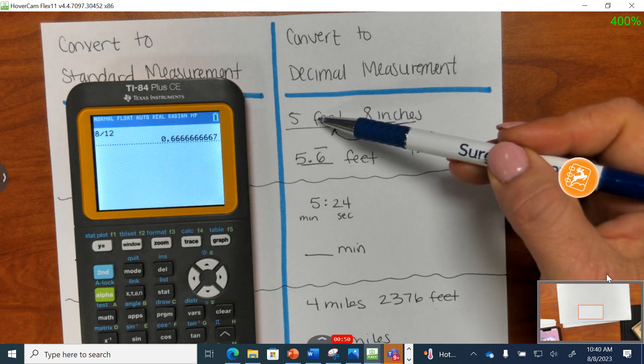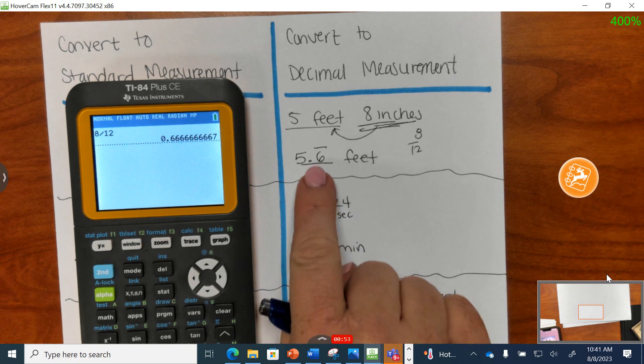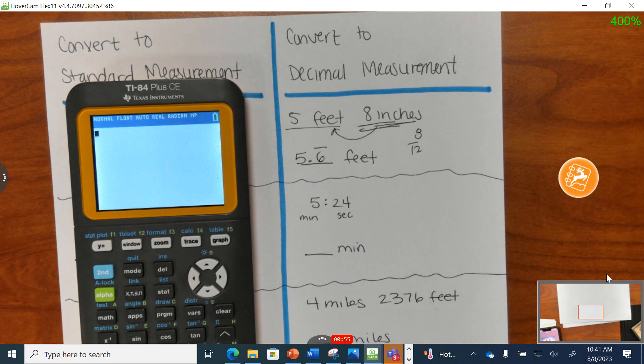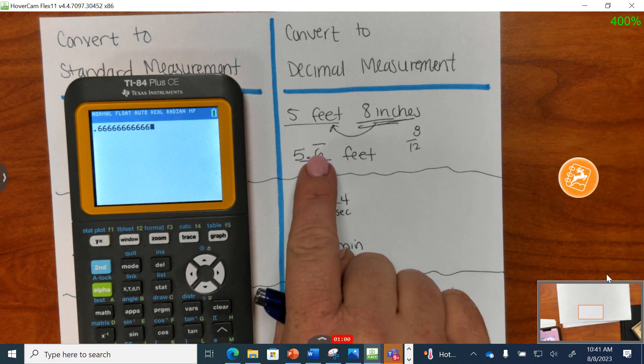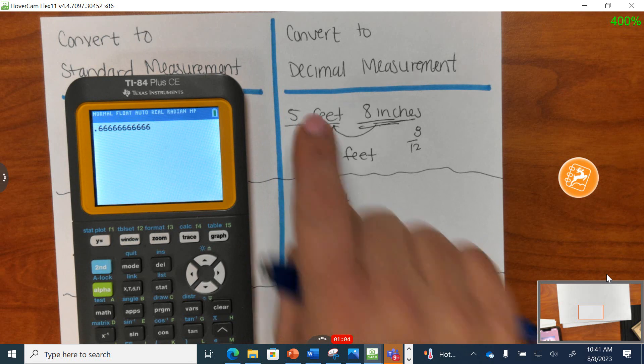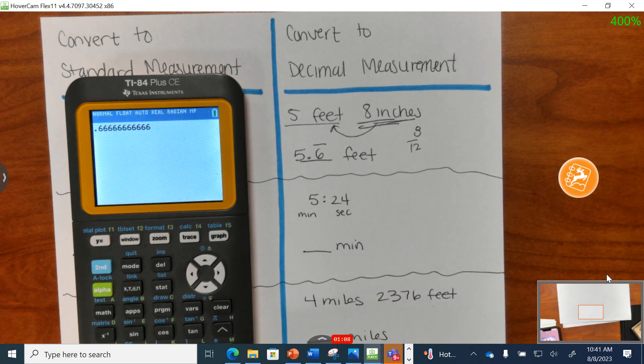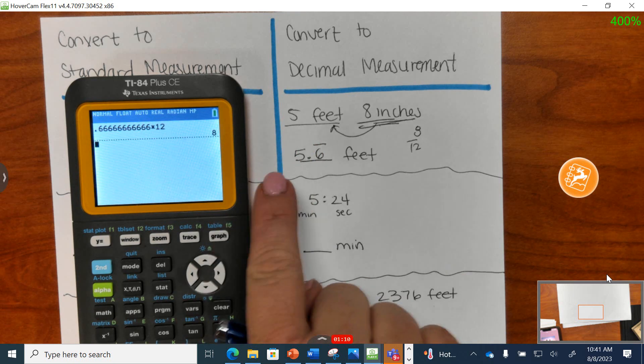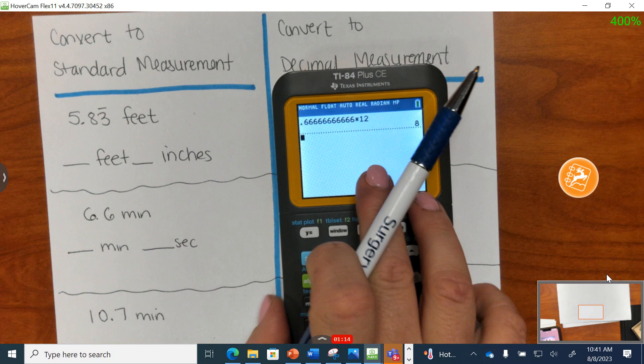So I went from standard measurement to decimal. Now we can reverse that. So we're going to take 0.6 repeating. Please do this with me on the calculator. Type it all out. Put lots of 6s in. And I can convert from this form back to standard form. How many inches, again, are there in 1 foot? 12. So take it times 12. There is your 5 feet and 8 inches.